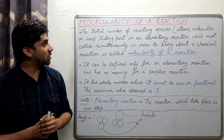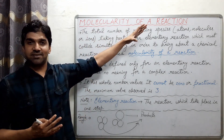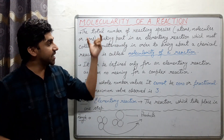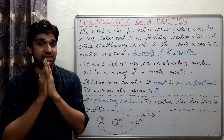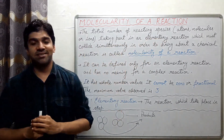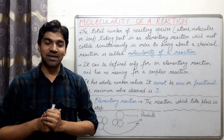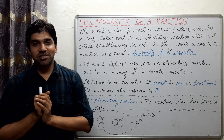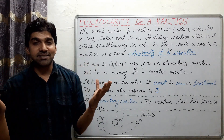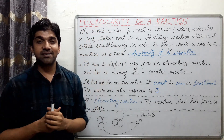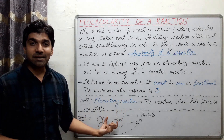That's about the molecularity of a reaction — the total number of reacting species, which can be atoms, molecules, or ions, taking part in an elementary reaction, which must collide simultaneously to bring about a chemical reaction. Now we will discuss the different types of reactions based upon molecularity: reactions can be unimolecular, bimolecular, or trimolecular.